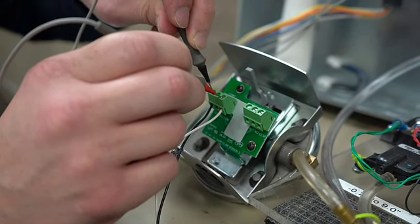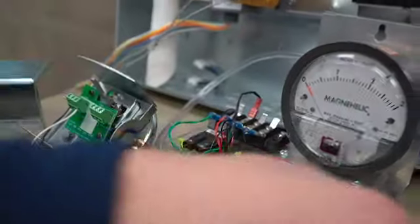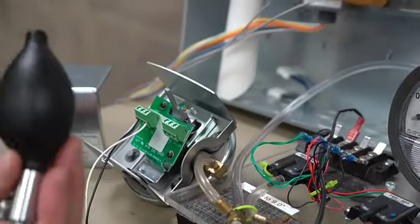In order to test this properly, we have to have a magnehelic gauge and one of these little medicine balls. These are on Amazon, you can get them for like eight or nine dollars, and this will help you tell when this thing is tripped.